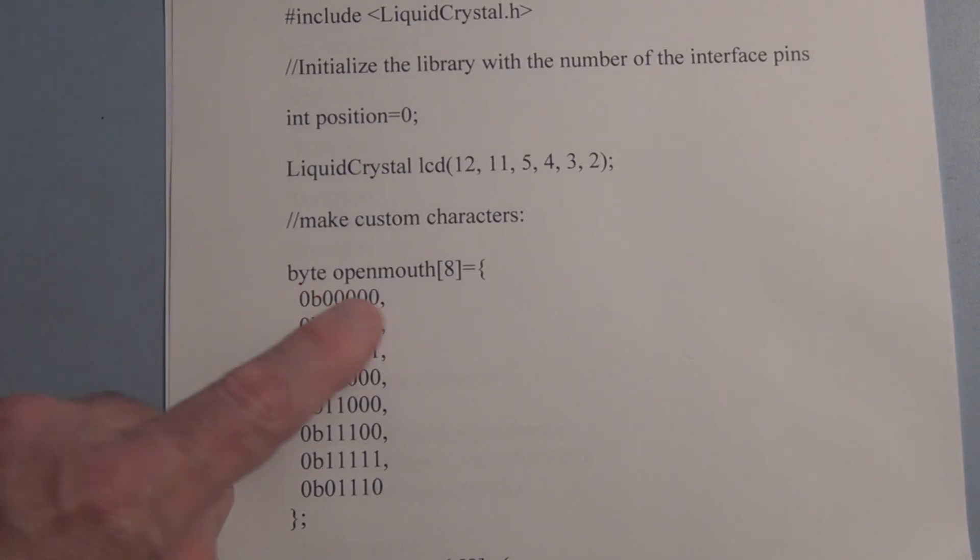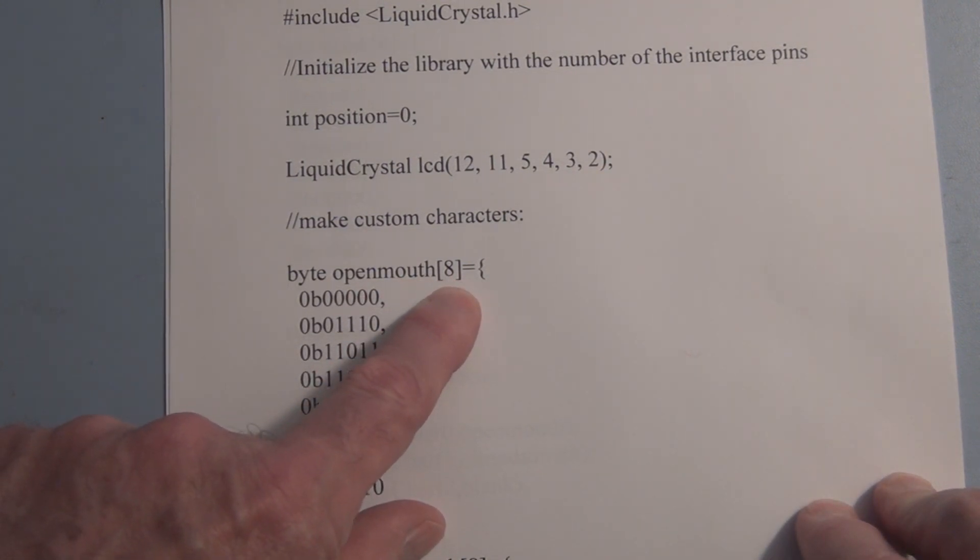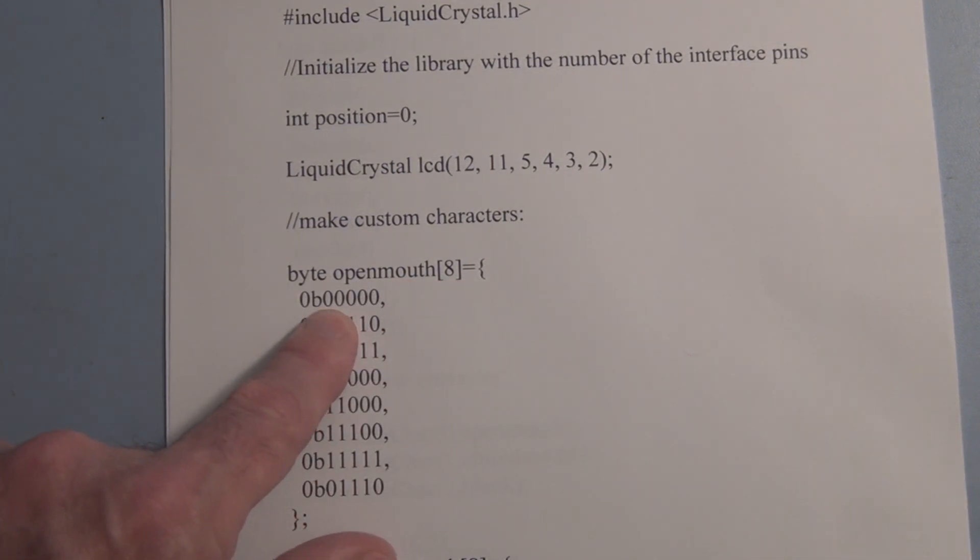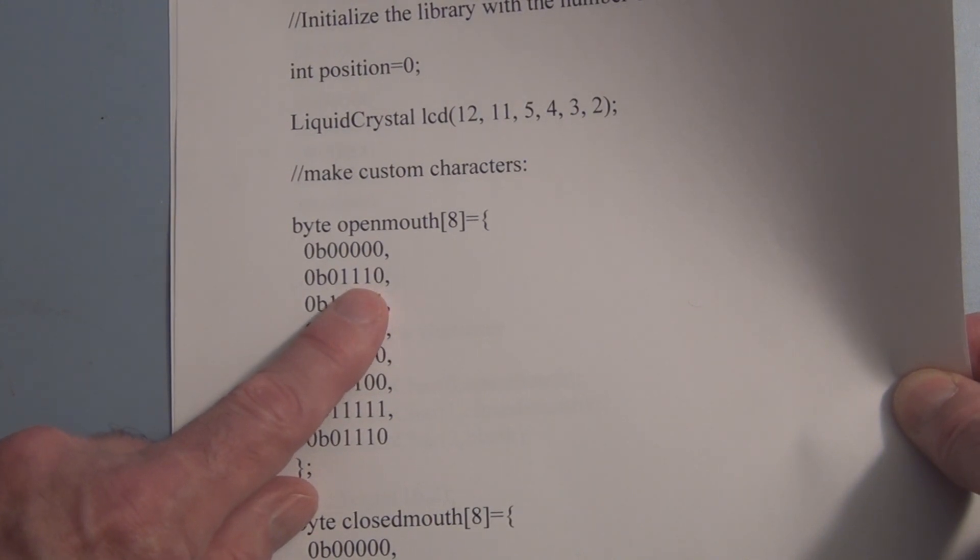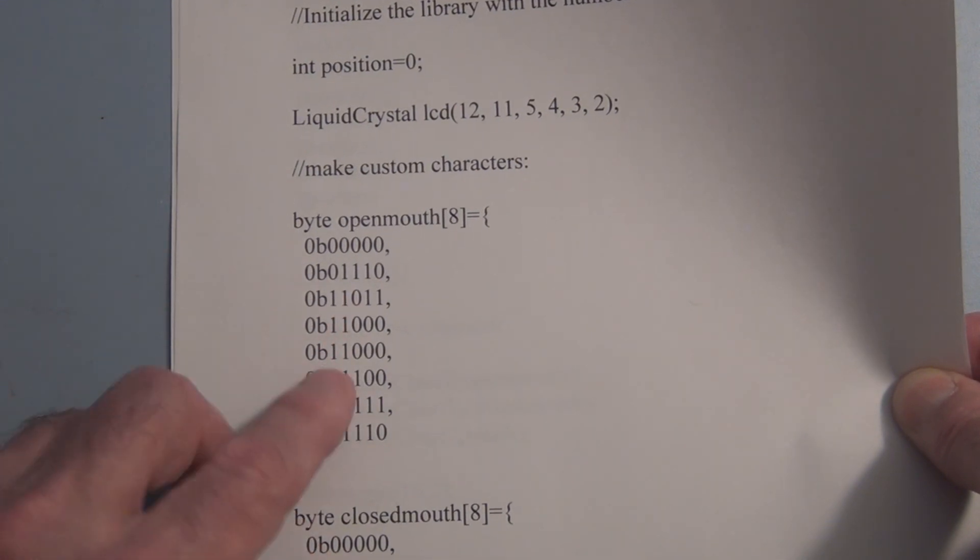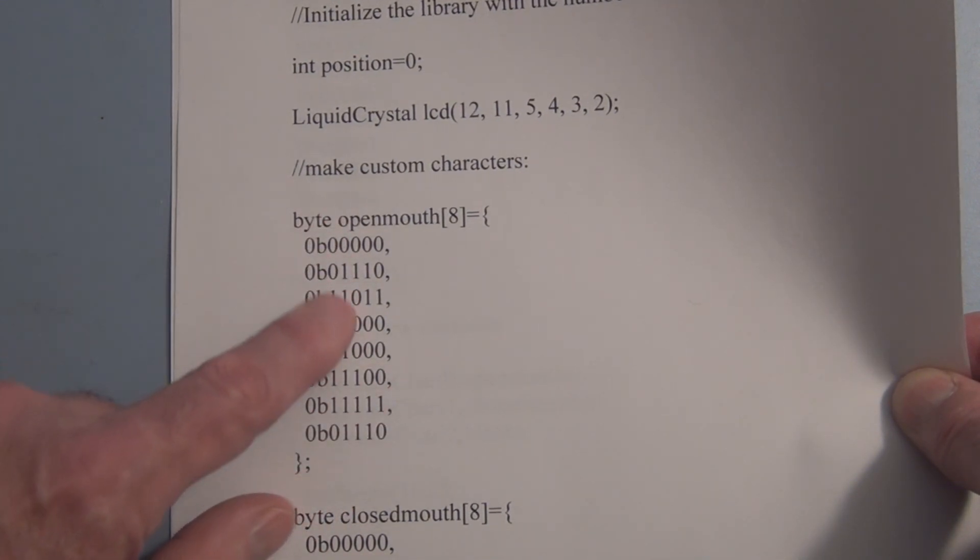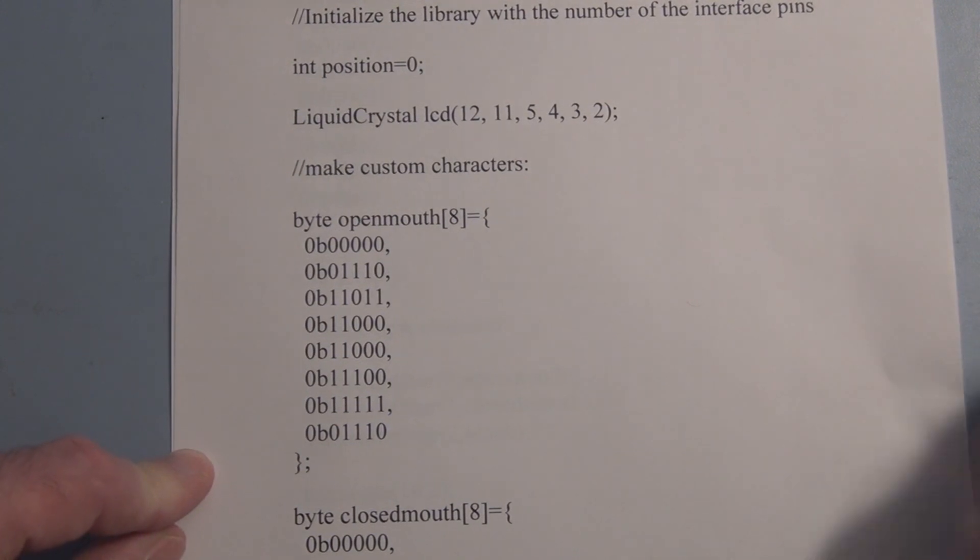So this is the open mouth custom glyph or character. I've got byte and you name it open mouth bracket eight and then you just have these bytes here. You specify which pixel you want on and which ones you want off. You can see here there are eight bytes and it's a five by eight so it seems kind of squished but it looks better when it's actually displayed, looks sort of similar to a Pac-Man.